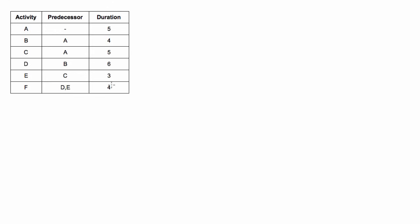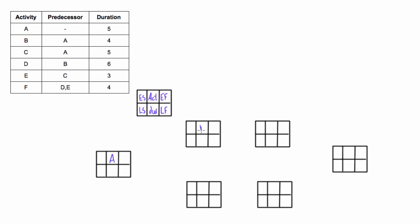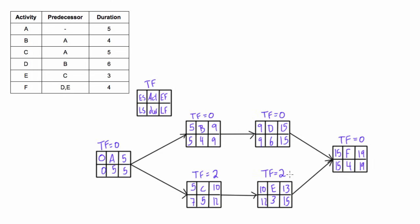First, let's draw the PDM network diagram for this table of dependencies — you already know how to do that, so it looks like this. We can then do the forward pass to calculate the early start and early finish, and the backward pass to calculate the late finish and late start. From the last video you know how to calculate total float, and by identifying activities with a total float of zero we can draw the critical path.